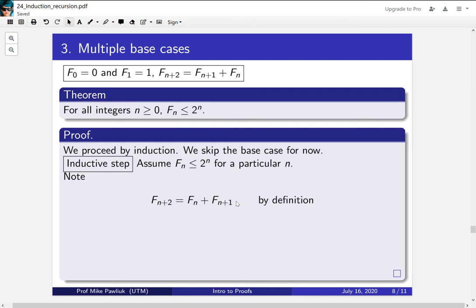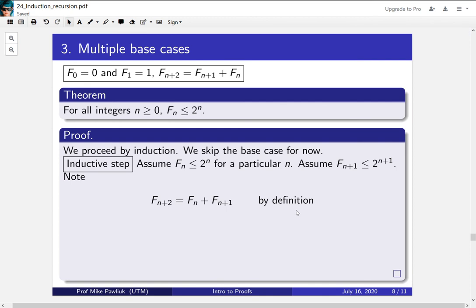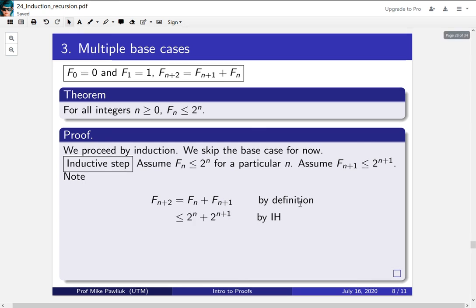So in order to get a bound on this, we need to make an assumption about it. So we're actually going to make two assumptions, that F of n is less than 2 to the n, and F of n plus 1 is less than 2 to the n plus 1. So we're making two induction hypotheses. Now in this case, now we have bounds on F of n and F of n plus 1. And our goal is to show that this whole thing is less than 2 to the n plus 2.